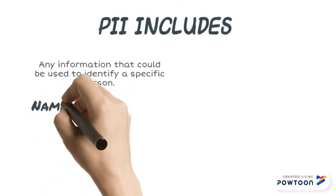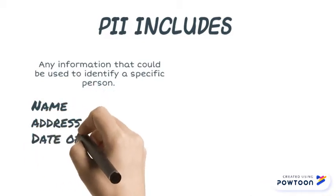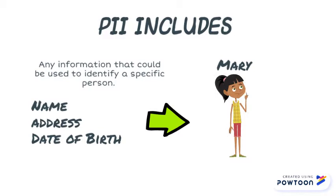PII includes any information that could be used to identify a specific person. Name, address, and date of birth work together to identify Mary.